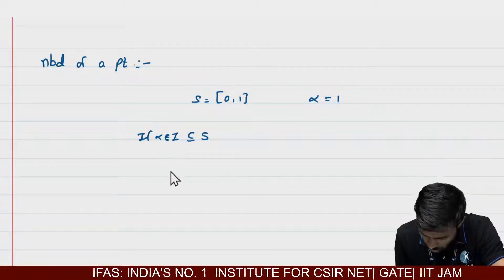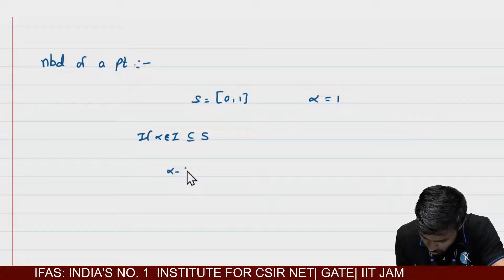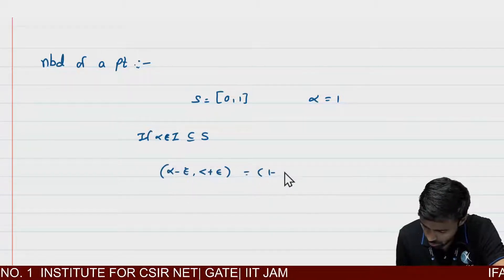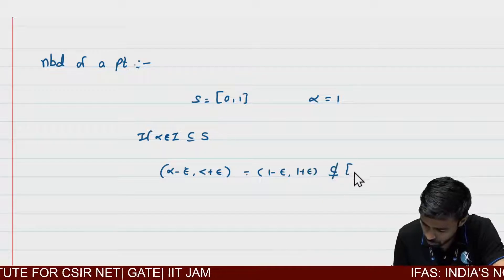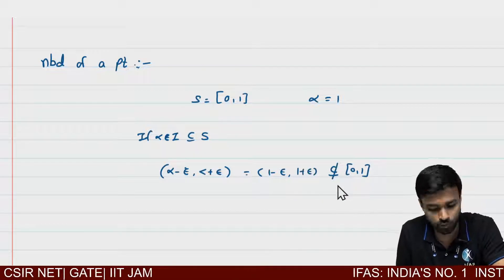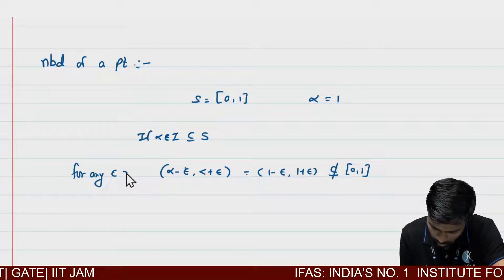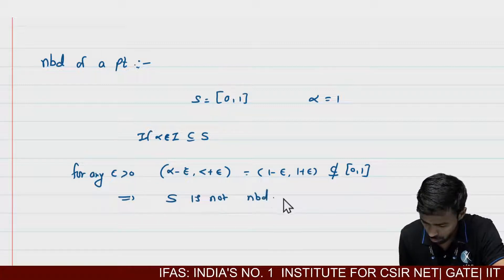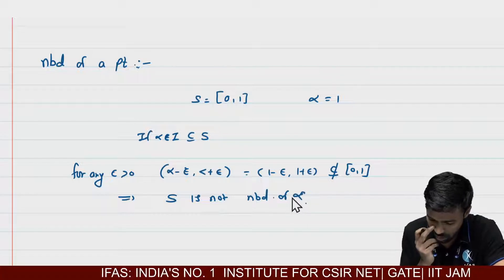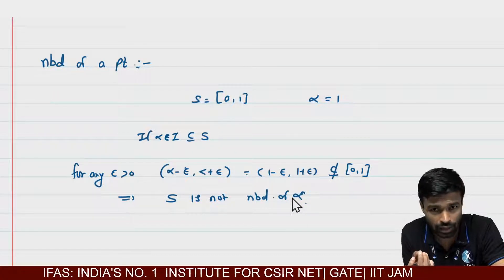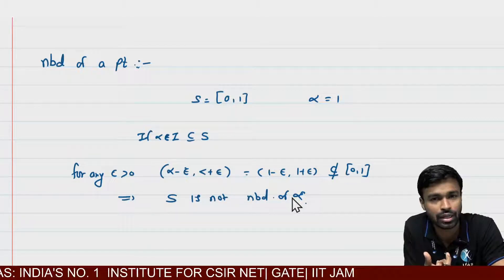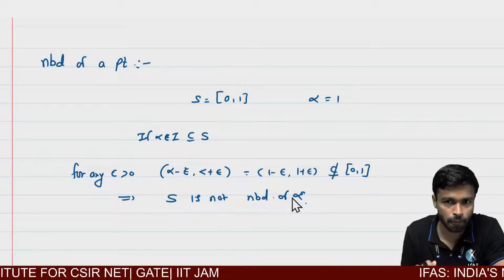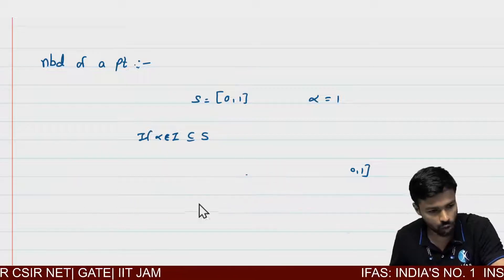We need an open interval. So consider alpha minus epsilon to alpha plus epsilon, that is 1 minus epsilon to 1 plus epsilon. This interval will never be a subset of the closed interval [0, 1] for any epsilon greater than 0. This implies that S is not a neighborhood of alpha. Why? Because there does not exist any open interval I which is a subset of S and which contains the point alpha = 1. This is the definition of neighborhood of a point.